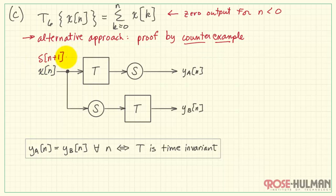But I'm going to leverage the fact that we have 0 output for n less than 0. So I'm going to choose specifically a delta function that is only 1 for a value less than 0. That means the system operator doesn't see it, and the output on the top track, y_a, is just 0.